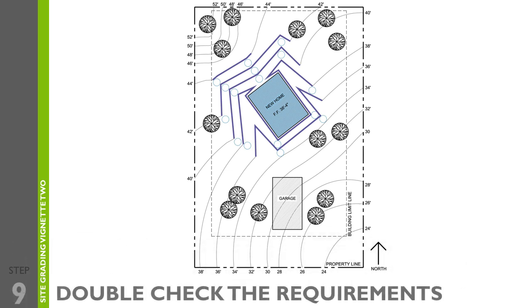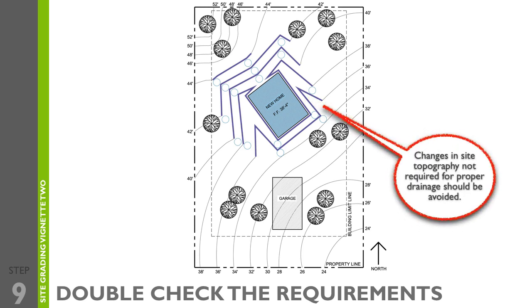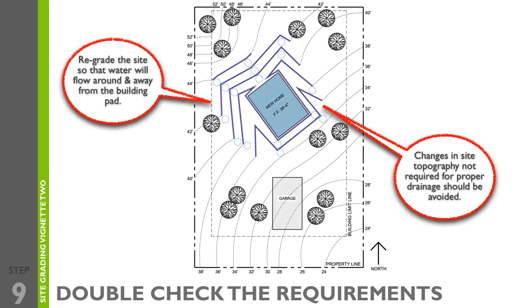Step nine is to double check the requirements. Check your solution against your notes from the program to make sure all requirements are met. Use sketch lines and circles to make sure the minimum and maximum slope requirements are met as well.